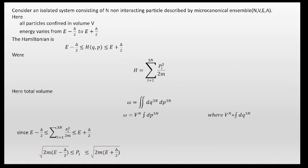Practically, the energy varies from E minus delta/2 to E plus delta/2, so the Hamiltonian varies from E minus delta/2 to E plus delta/2, where H equals p² / 2m. Since the Hamiltonian varies over this range, the momentum varies from √(2m(E − delta/2)) to √(2m(E + delta/2)).